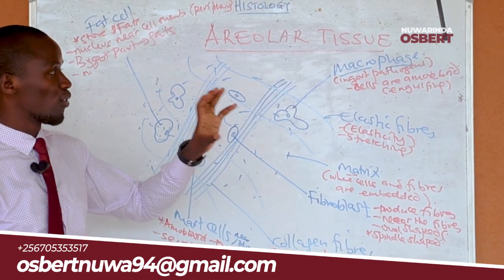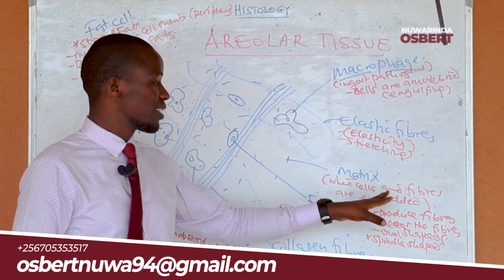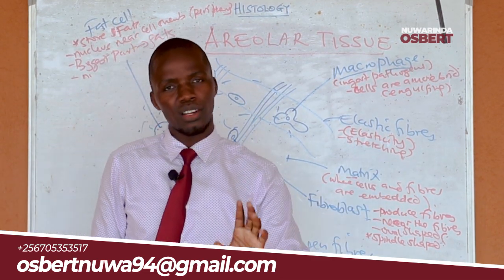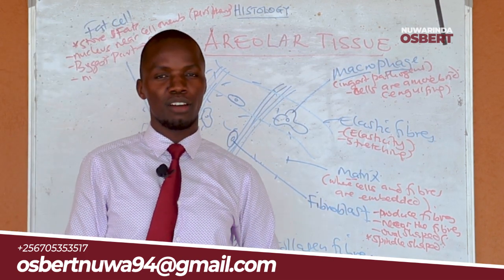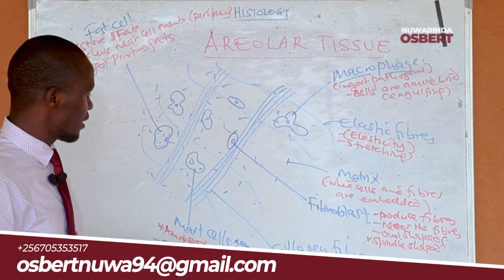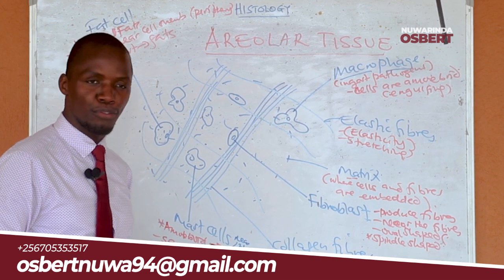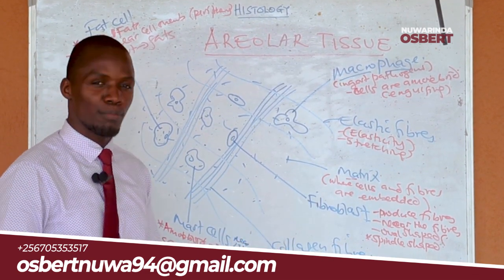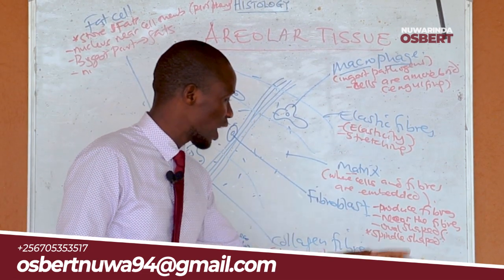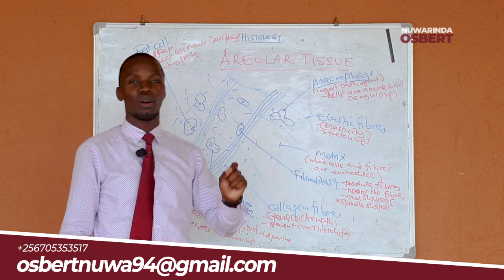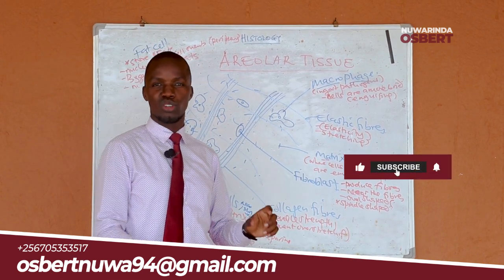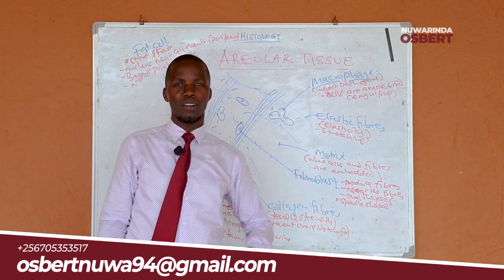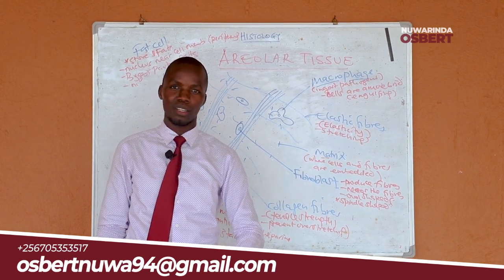To summarize: areola tissue is made up of a ground substance or matrix within which cells and fibers are embedded. The cells are of four types — fibroblasts, macrophages, mast cells, and fat cells — each with its own function. The fibers are of two types: collagen fibers, which provide tensile strength, and elastic fibers, which provide elasticity. I hope you have learned something — please share this video so others can learn too. God bless you.